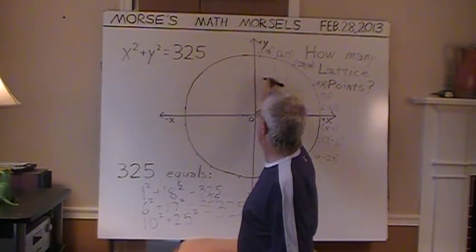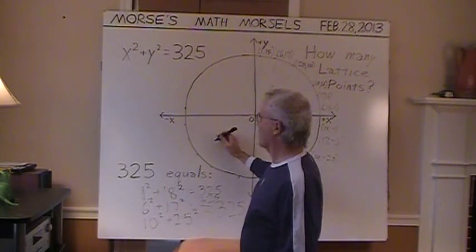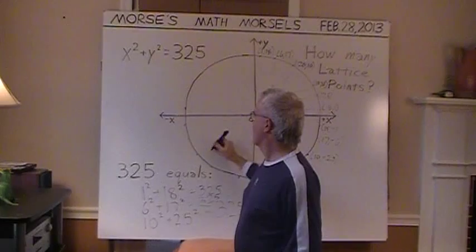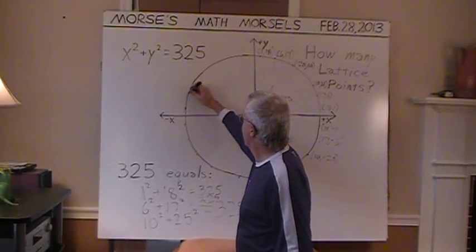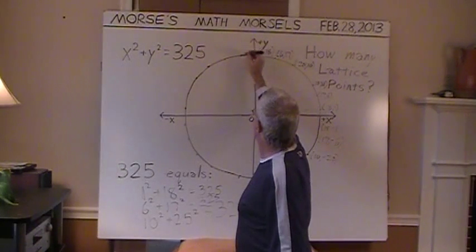And finally, getting the idea, we could reflect these lattice points across the y-axis or the ones from below the x-axis to above the x-axis. And throw in, you guessed it, 6 more lattice points.